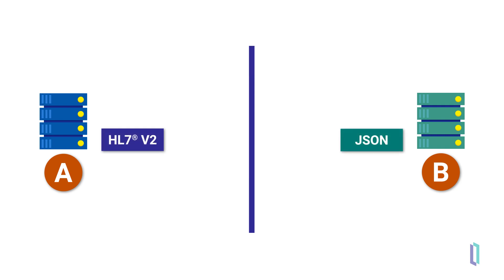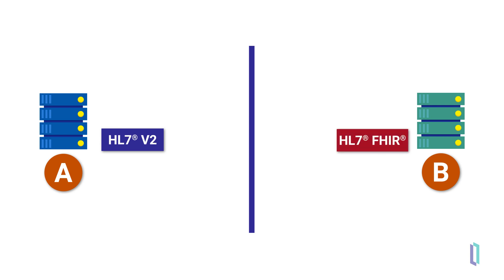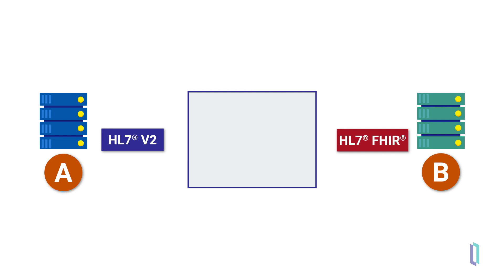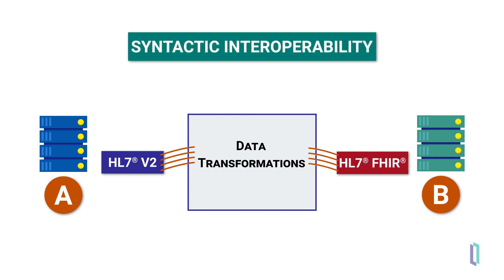For instance, system A sends and receives patient information as HL7v2 messages, and a patient-facing application on system B uses a FHIR repository with data represented in a JSON format. As it stands, system A cannot contribute to the FHIR repository and, thus, the application on system B cannot utilize that system's patient data. A tried and true solution is to have an intermediary system that transforms data from one format to another, such as from HL7v2 into the FHIR format via data transformations. By creating such a mapping, we achieve syntactic interoperability.